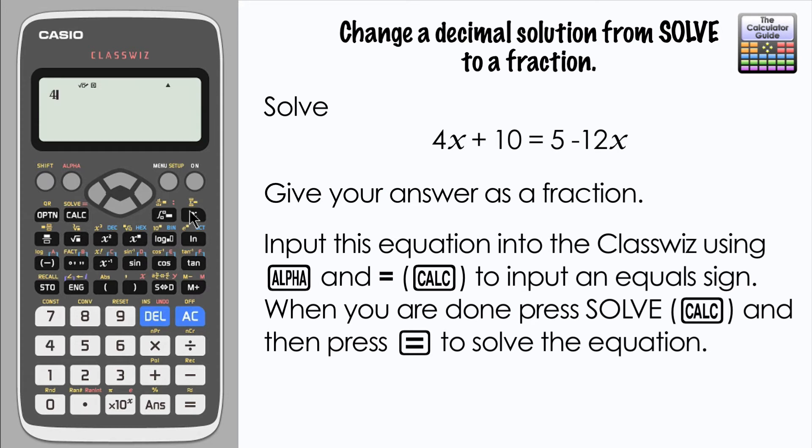We're going to input this into the ClassWiz. First, it's 4x + 10. Remember that we don't want to press the equals function, we want to insert an equals onto our line. That's ALPHA and CALC. That will put an equal sign into a calculation line here, and it's 5 - 12x.